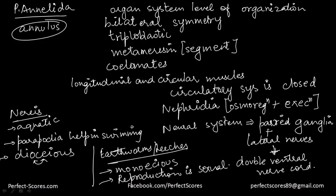To revise phylum Annelida: the phylum gets its name from the Latin word annulus, meaning rings. They have organ system level of organization with bilateral symmetry. They are triploblastic and exhibit metamerism — body divided into segments. They are coelomates with a proper body cavity. Longitudinal and circular muscles help them move. The circulatory system is closed, with blood flowing in vessels. Nephridia are present for osmoregulation and excretion. The neural system has paired ganglia connected by lateral nerves to a double ventral nerve cord.